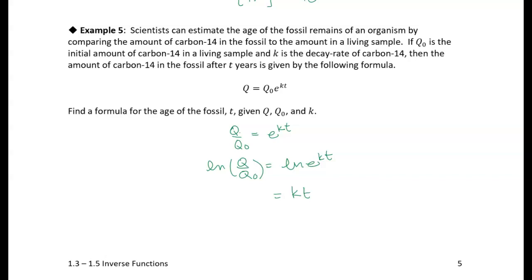All right, and then over here, I can use the property. I could just leave it like that, but I could use a property of exponents that says that the log of a quotient is the difference of the logs. So the natural log of Q minus the natural log of Q0. Because we have a base of e.